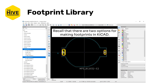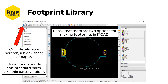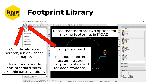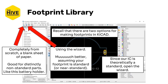Recall there are actually two options for making footprints in KiCad. The one on the left is the completely from-scratch blank piece of paper — it's good for distinctly non-standard components like battery holders. The one on the right is the wizard; it's much better assuming your footprint is standard or nearly standard. Since our IC is theoretically standard or nearly standard, we're going to open the wizard.